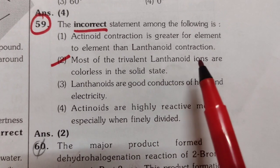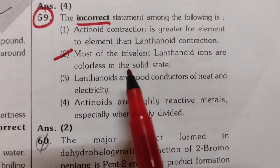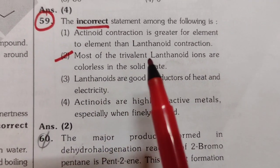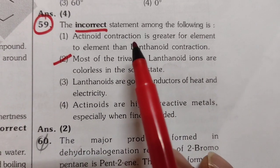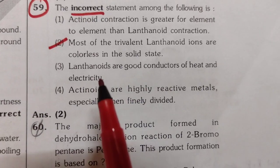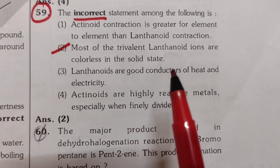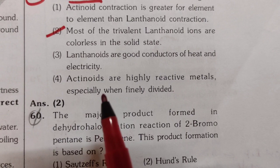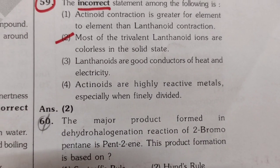Most of the trivalent lanthanoid ions are colorless, it was given. But actually, many are colored. First one is correct: actinoid contraction is greater than lanthanoid contraction. Third one is also correct: lanthanoids are good conductors of heat and electricity. Fourth one is also correct: actinoids are highly reactive metals.